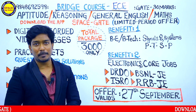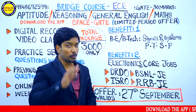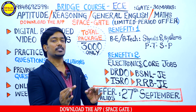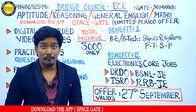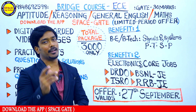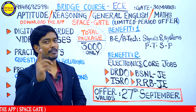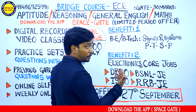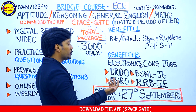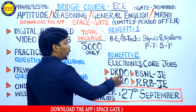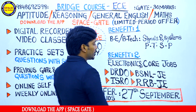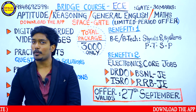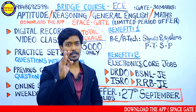The second benefit is that after completing your diploma, you also need to focus on your government job career. The best jobs from diploma are government jobs — including DRDO, ISRO, BSNL JE, and RRB JE — and this bridge course will help you prepare for all of these.